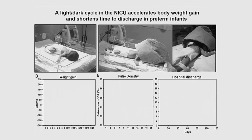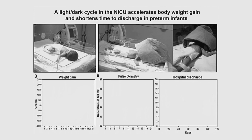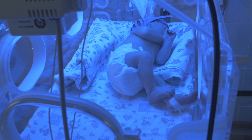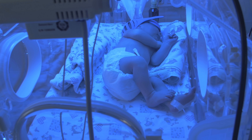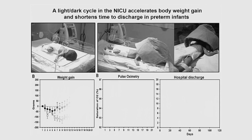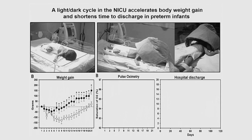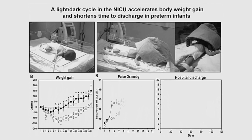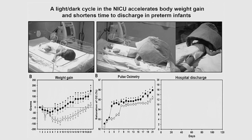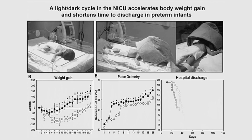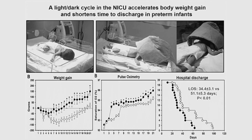Consider this example: preterm newborns in a neonatal intensive care unit are normally kept in continuous light because it's easier for nurses to monitor them. But in one study, researchers covered their eyes for 12 hours at night for 21 days straight. This actually accelerated their body weight gain and allowed them to be discharged from the hospital sooner, and they also had better oxygen levels. So the timing of our exposure to the light-dark cycle is important for synchronization of many circadian rhythms that can have major effects on motor development, cardiovascular health, and more.